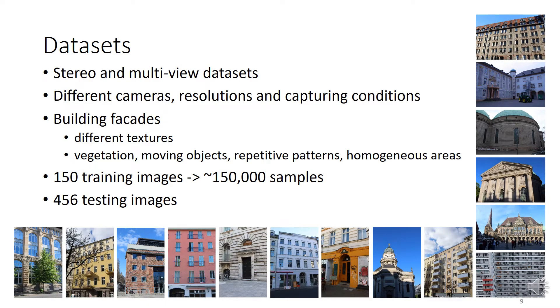Many experiments were performed to evaluate filtering, but also its actual impact on subsequent computer vision processes, since a good classification performance does not automatically imply good performance in subsequent matching or other processing steps. The tests were done on various stereo and multi-view datasets depicting building facades. We used 150 training images resulting in 150,000 samples and more than 400 testing images, captured under different conditions depicting different types of buildings and including error-prone areas, which were successfully handled by the algorithm.